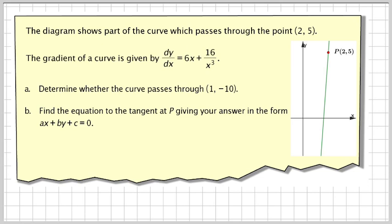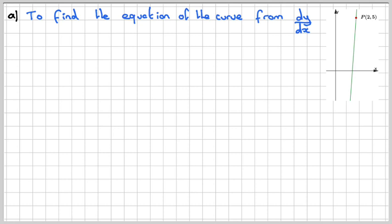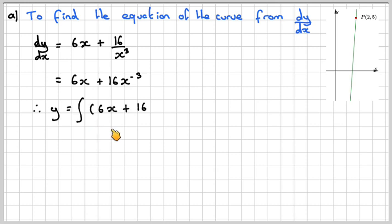So if we need to find the curve given that dy/dx = 6x + 16/x³, it's going to involve a bit of integration. To find the equation of the curve from dy/dx, we've got dy/dx = 6x + 16/x³, which we'll rewrite as 6x + 16x⁻³. So y will be the integral of (6x + 16x⁻³) dx.